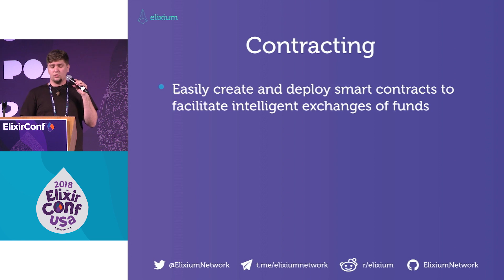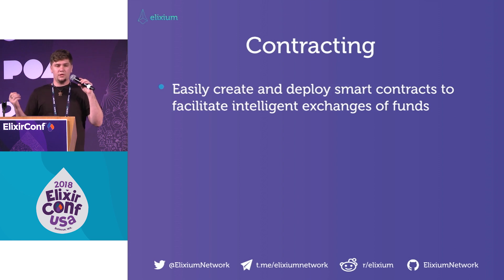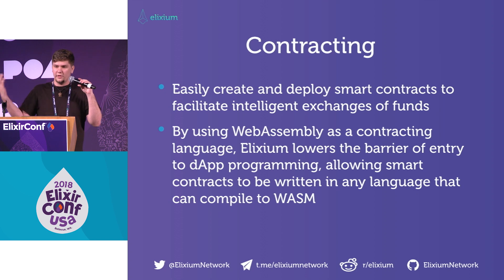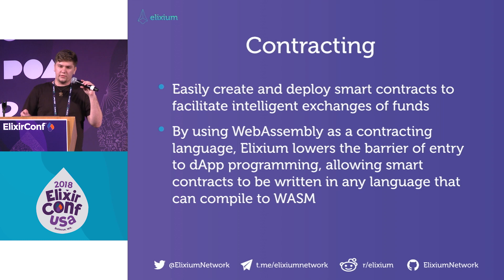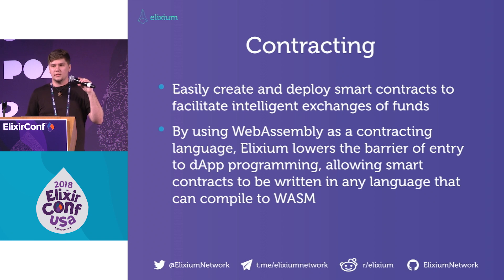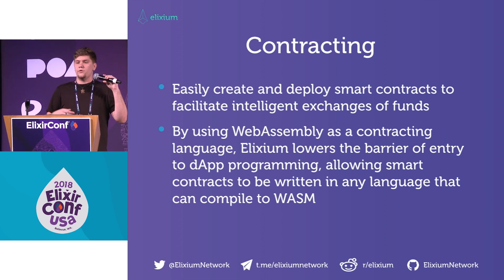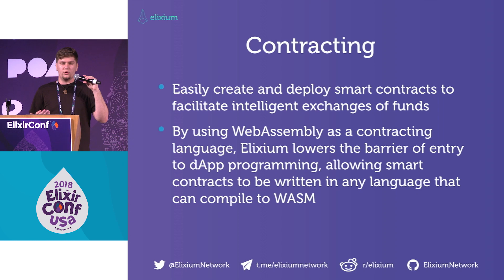We can easily create and deploy smart contracts on the network because we're using WebAssembly — or we plan to be; that's not built out yet. The issue with a lot of other decentralized application networks is that they require you to learn a language specifically to build dApps on that system, which is a time commitment and you worry about what happens if the system doesn't exist in a year or two. What WebAssembly lets us do is use your existing toolset — your JavaScript or Ruby — and all you have to do is learn a new API.